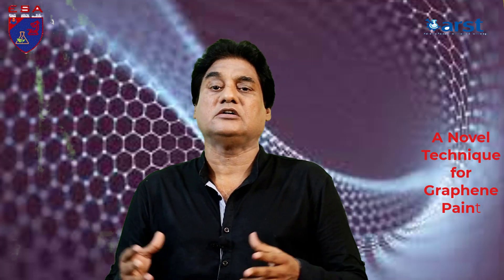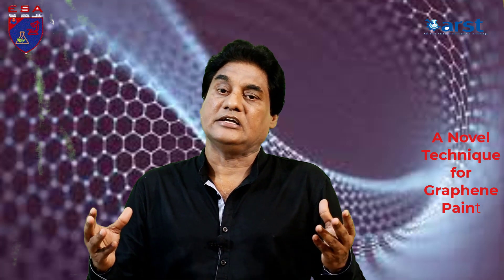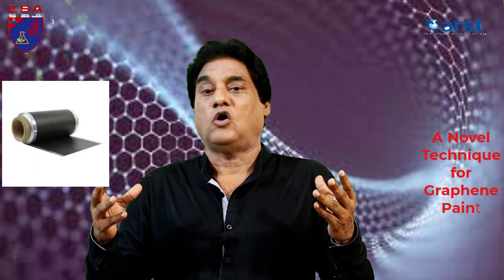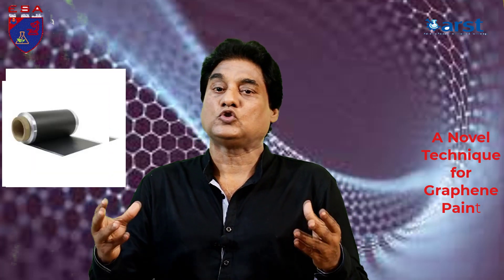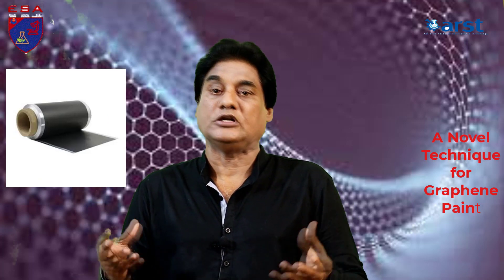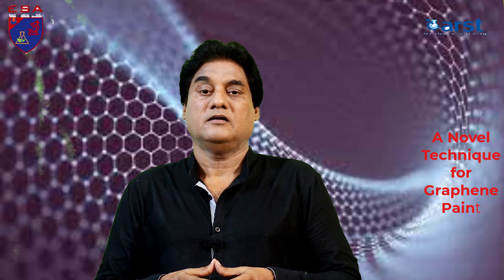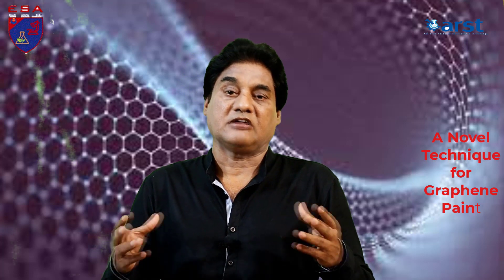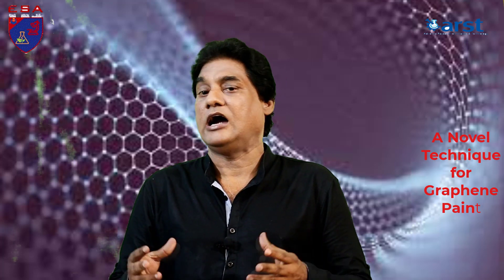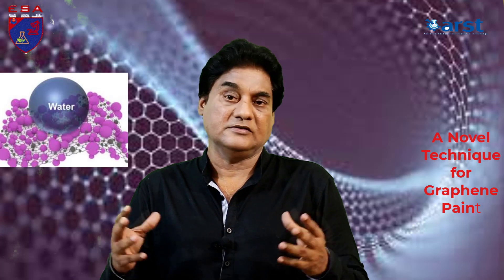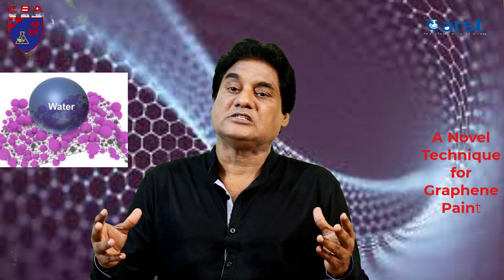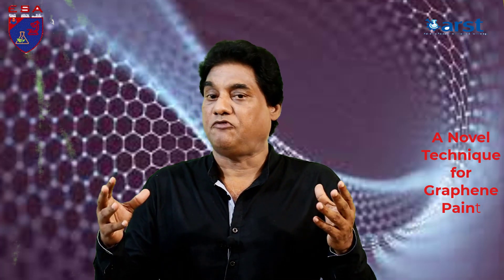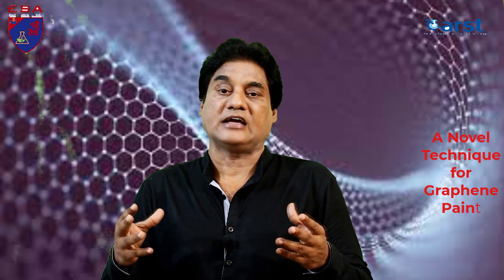Dispersing graphene in water may be an excellent method to get it into a suitable mechanism. This solution may then be painted or sprayed onto a surface to create supercapacitor electrodes or conductive coatings. However, the issue is that graphene and other carbon-based materials such as graphite and carbon nanotubes are hydrophobic, or water-repellent. They may be dispersed using strong organic solvents and mechanical treatment, although the former is poisonous and the latter can cause problems.